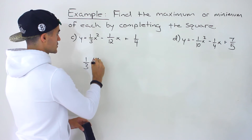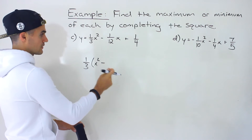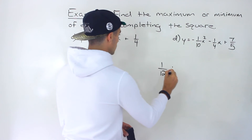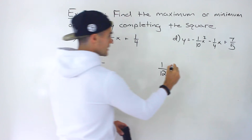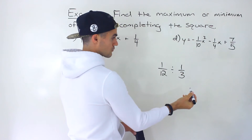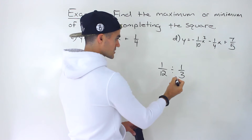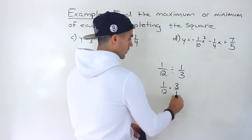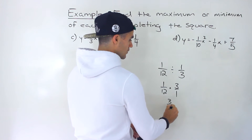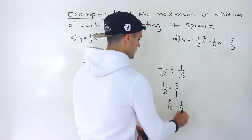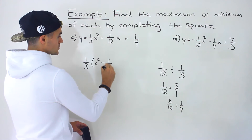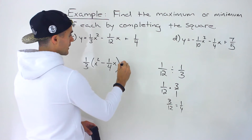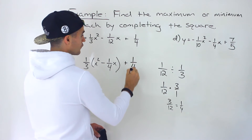After factoring out one-third, we end up with x². Now for the coefficient of x: we take one-twelfth and divide it by one-third — that's one-twelfth times three over one, which gives three-twelfths, simplifying to one-quarter. So we have one-third times x² minus one-quarter x, close the bracket, plus one-quarter at the end.